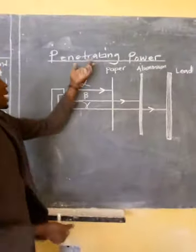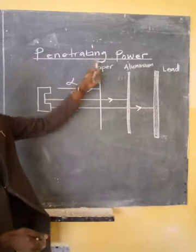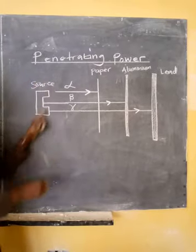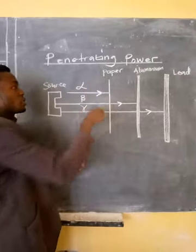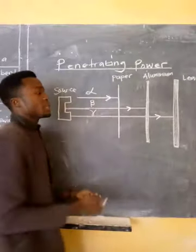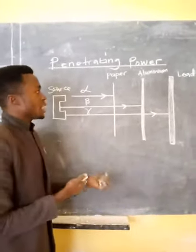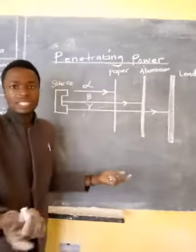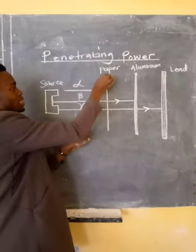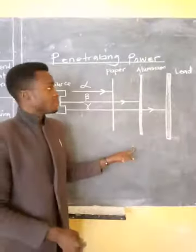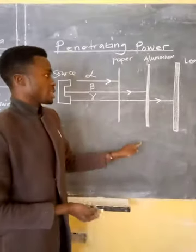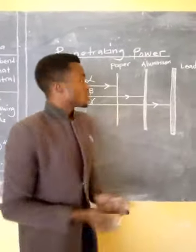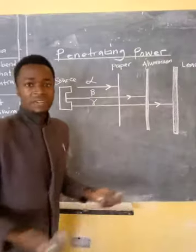Now we look at penetrating powers — the ability of a particle to pass through materials. Alpha has the weakest or lowest penetrating power; it cannot pass through even a piece of paper or skin, so it can be blocked by a sheet of paper. Beta will pass through paper but is blocked by aluminium. Gamma will pass through both paper and aluminium but cannot pass through lead.